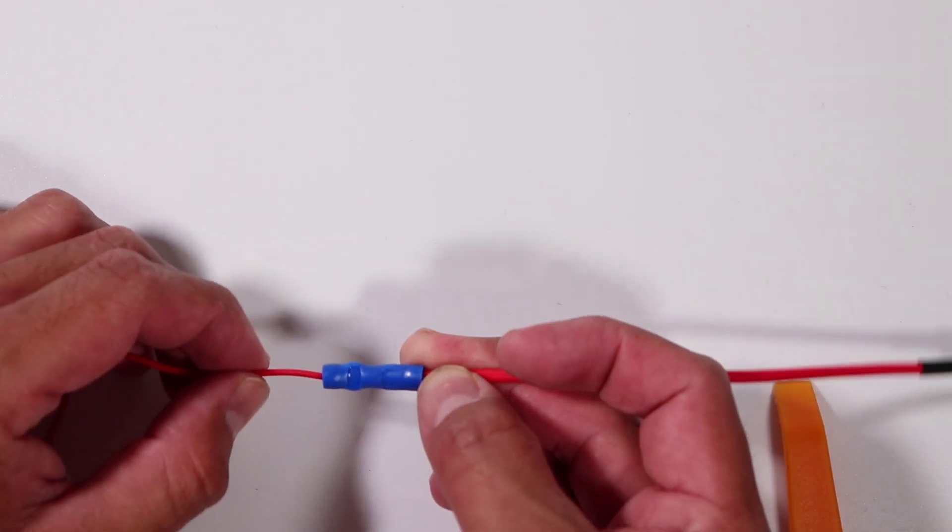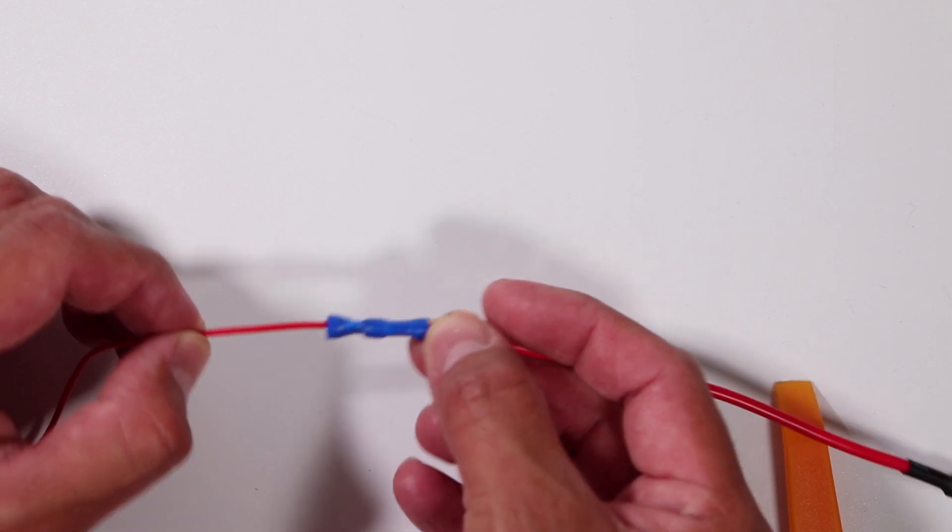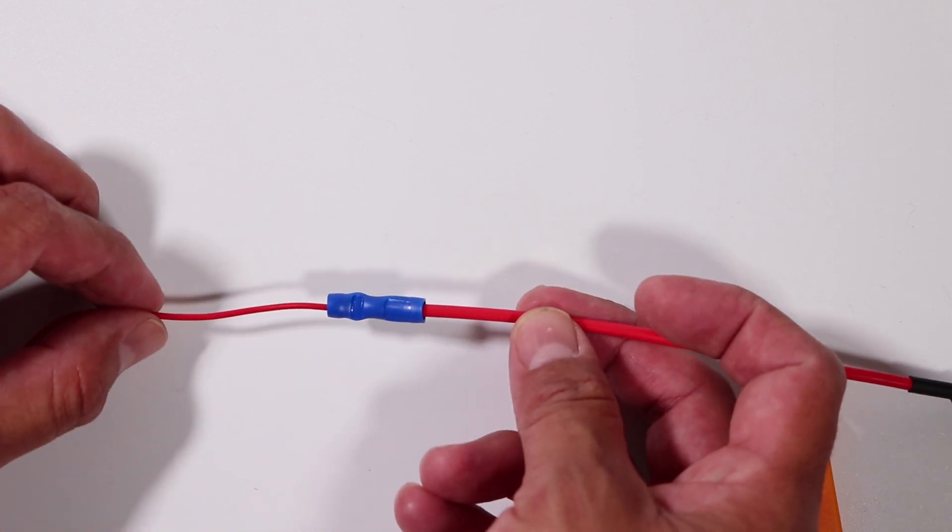Now, it's always a good practice. I like to tug on it just gently, confirm that it is secured in there and the wire is not going to come out. Okay, this splice is ready for installation.